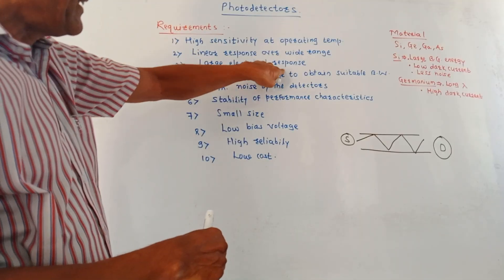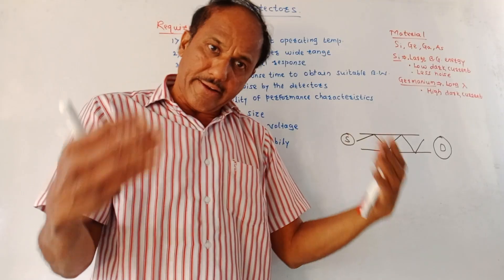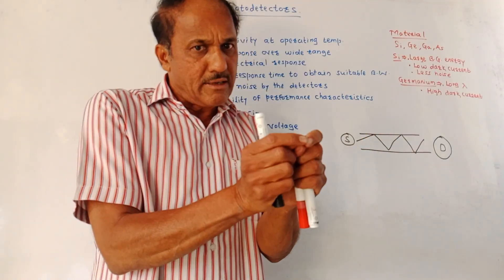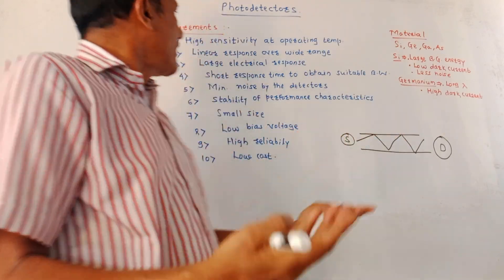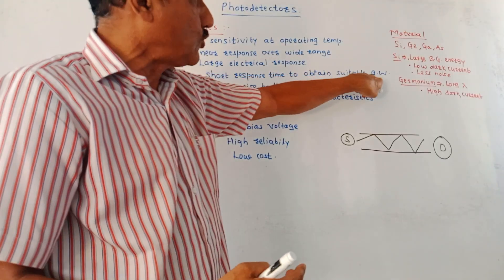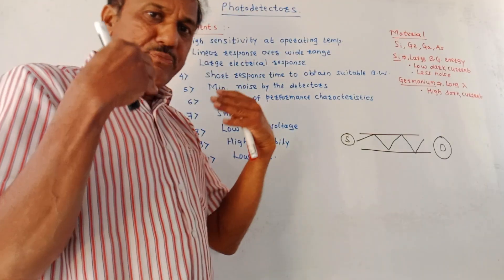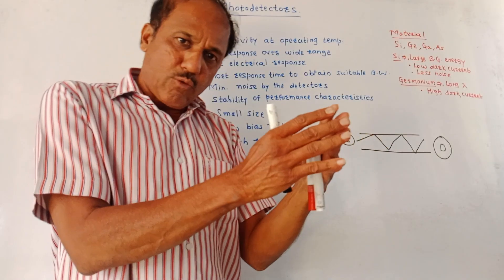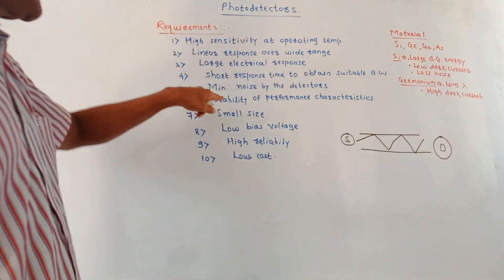Next, large electrical response. The output is an electrical quantity — let's say current — so the detector should have high efficiency, so that even for a small amount of incoming light rays, more current is generated. Then, short response time to obtain suitable bandwidth. The response time of the detector must be fast; response time means the time required to convert optical signals into electrical signals.